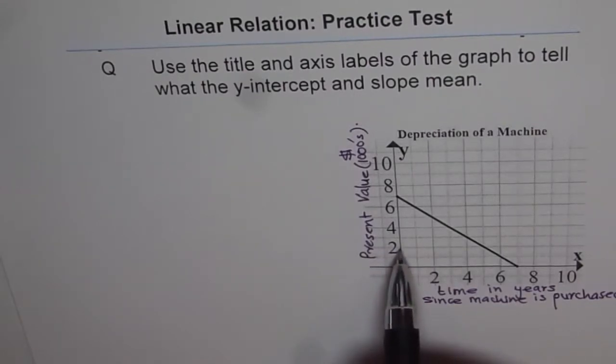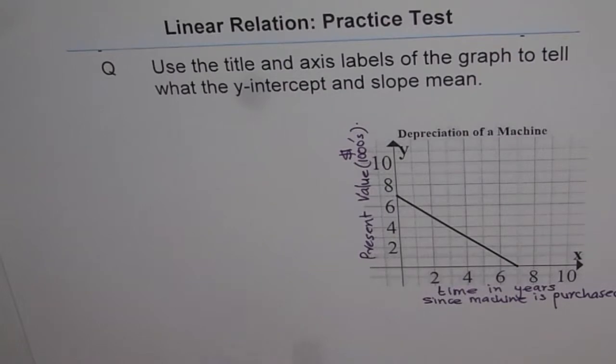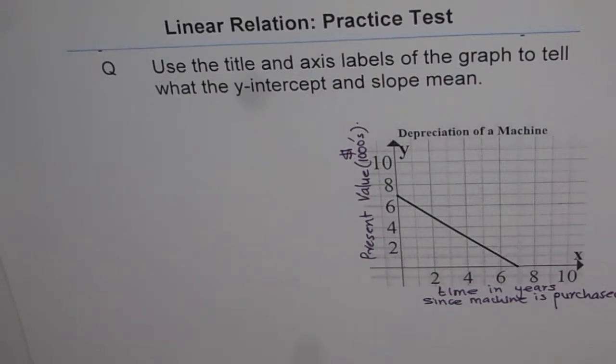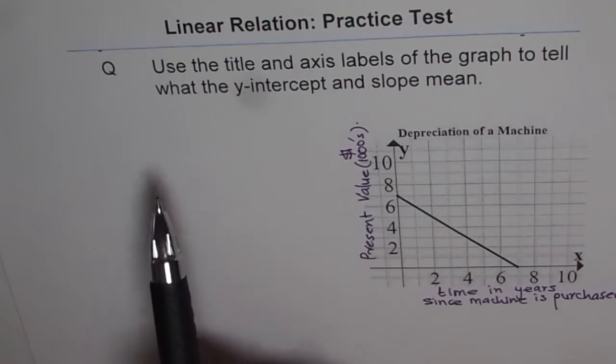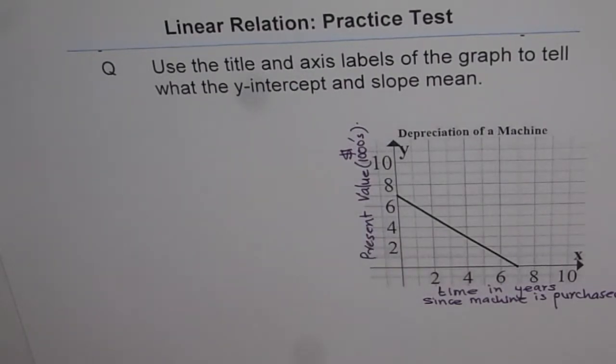For example, this point will be $2,000 and the point shown here will be $7,000. So this is what is given along both the axes and the title. Now you need to explain this and especially interpret the meaning of y-intercept here, which is this point, and the slope.